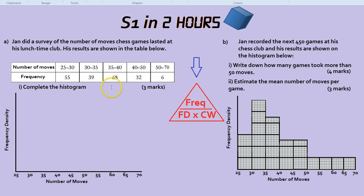So here's a very typical question. Jan did a survey of the number of moves chess games lasted at his lunchtime club. His results are shown in the table below. Number of moves, 25 to 30, 30 to 35, etc., and the frequency. The question is, complete the histogram for three marks.